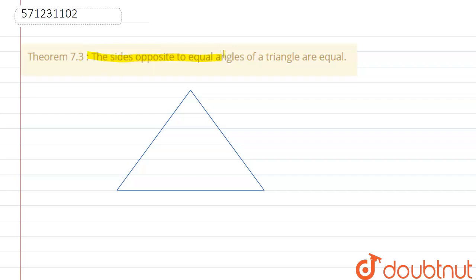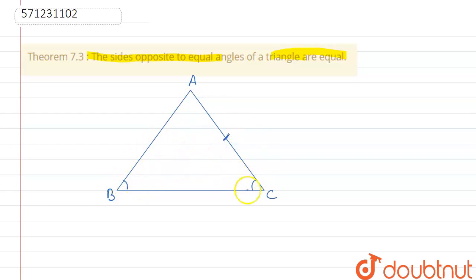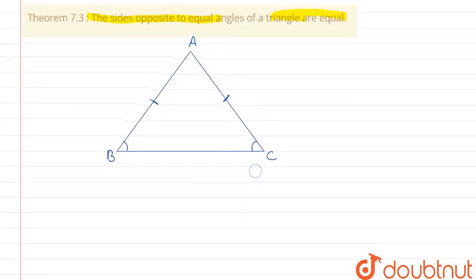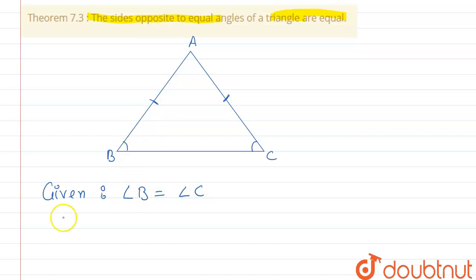Hello friends, here the question is: the sides opposite to equal angles of a triangle are equal. Let us make a triangle ABC. The question says that if angle B is equal to angle C, then we have to prove that AB is equal to AC, since these two sides are opposite to the equal angles.